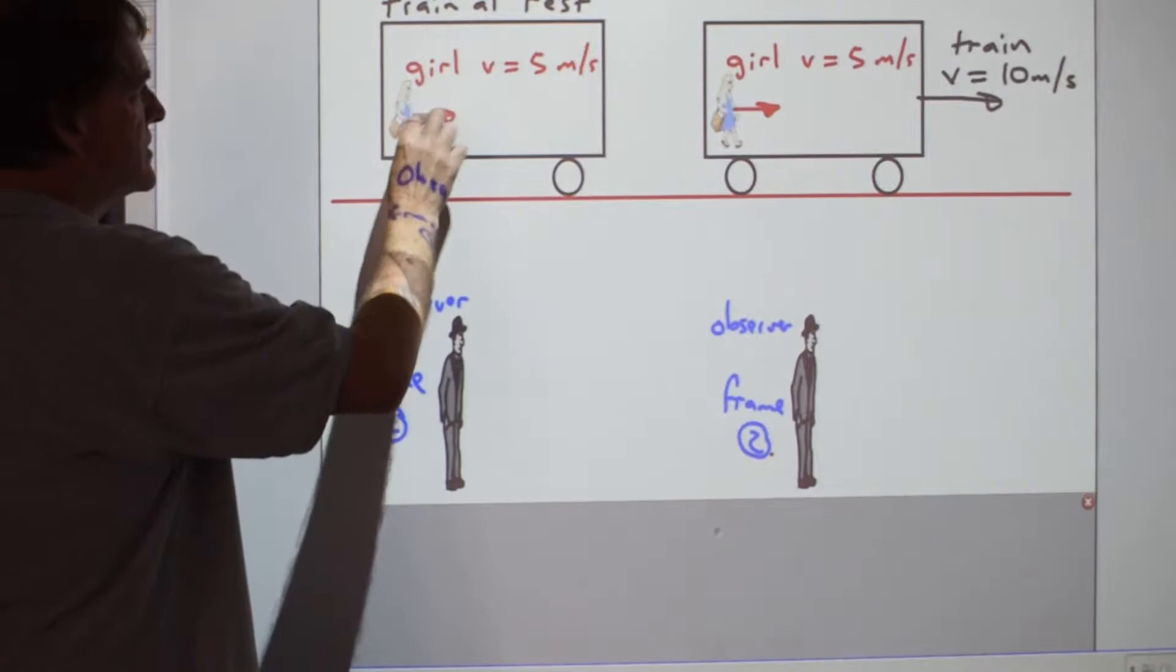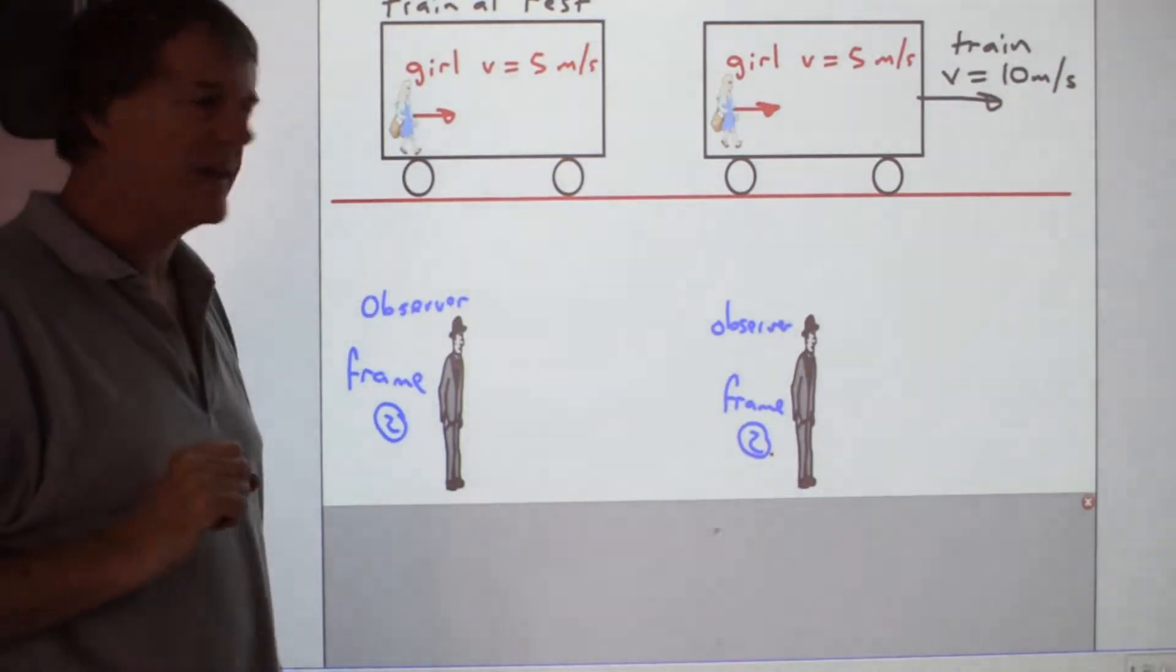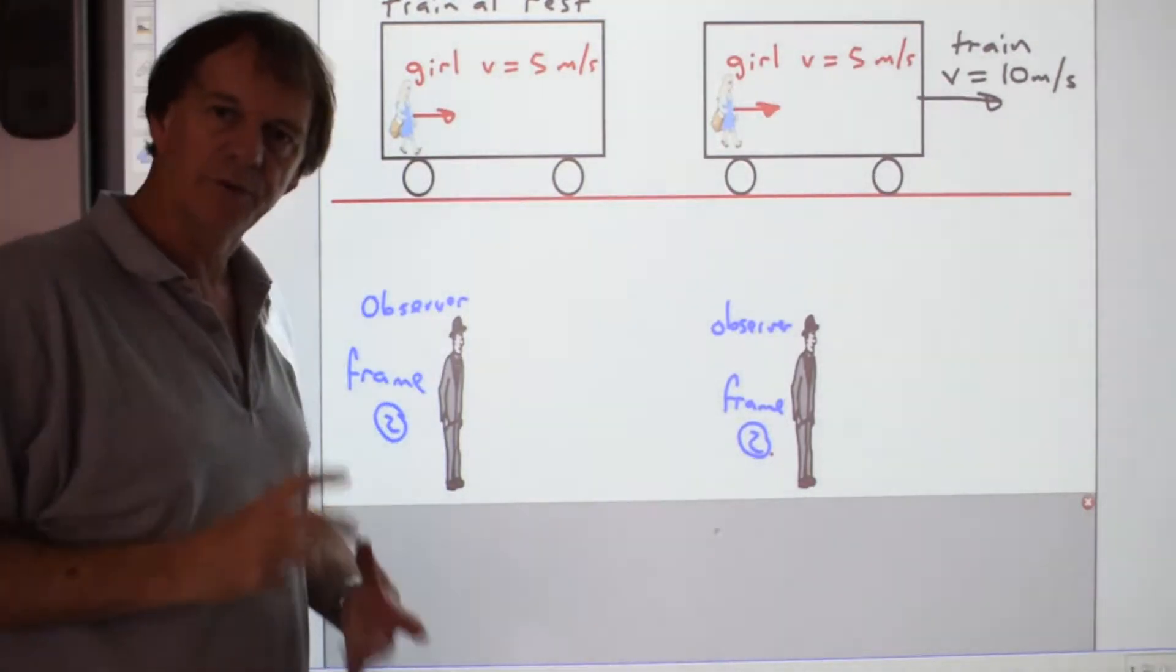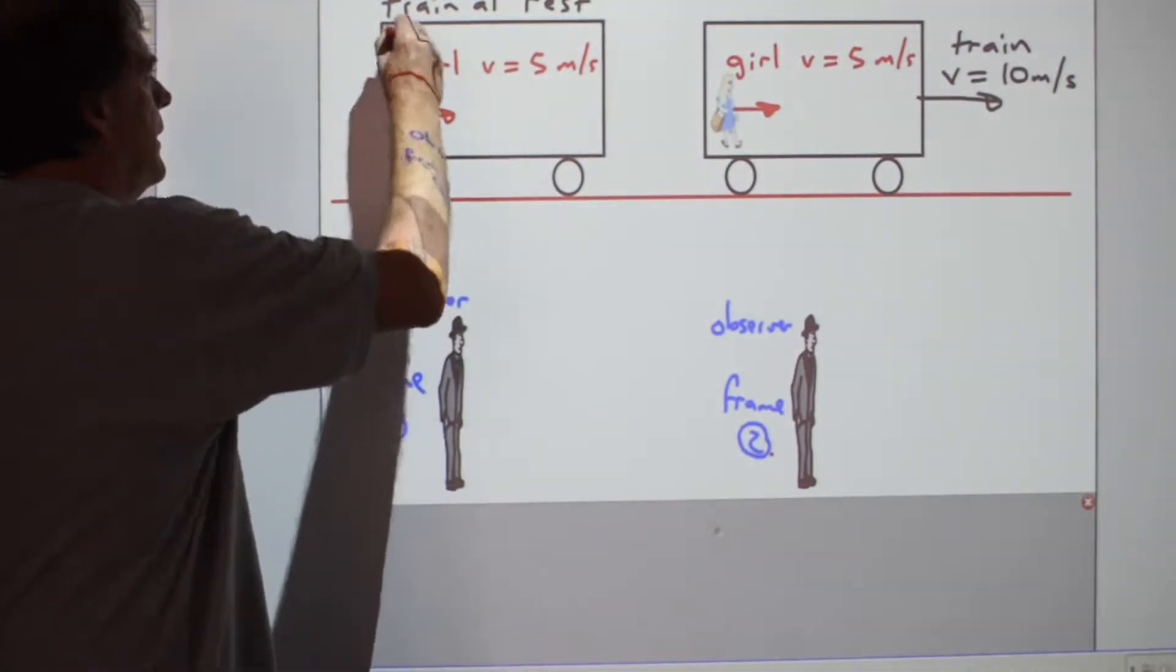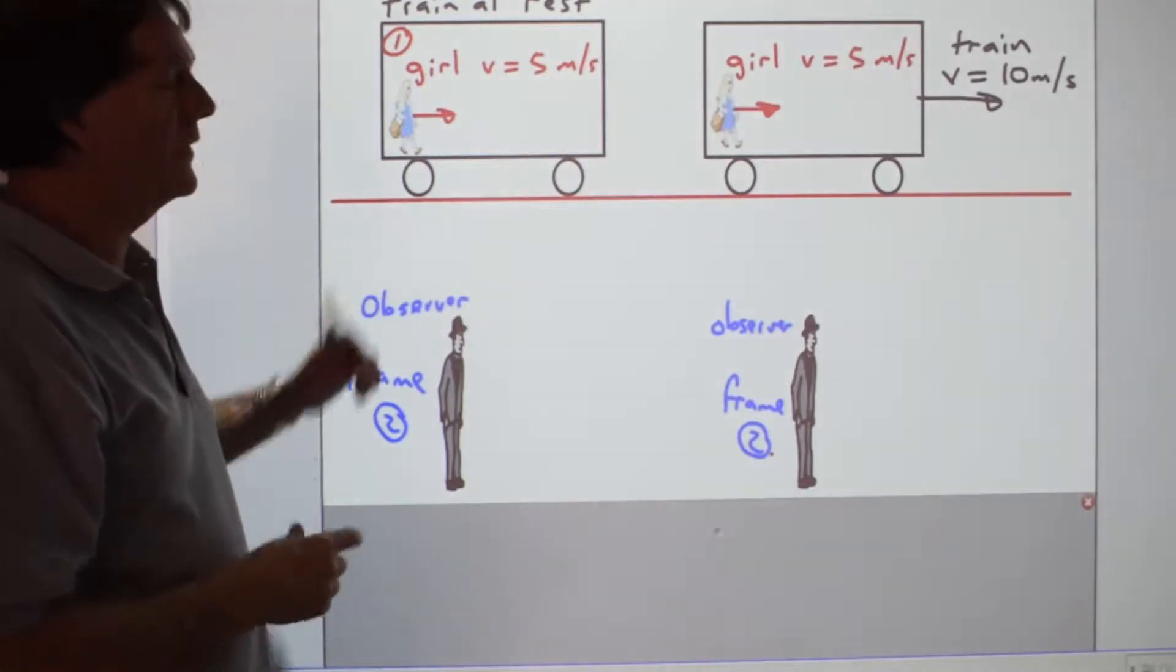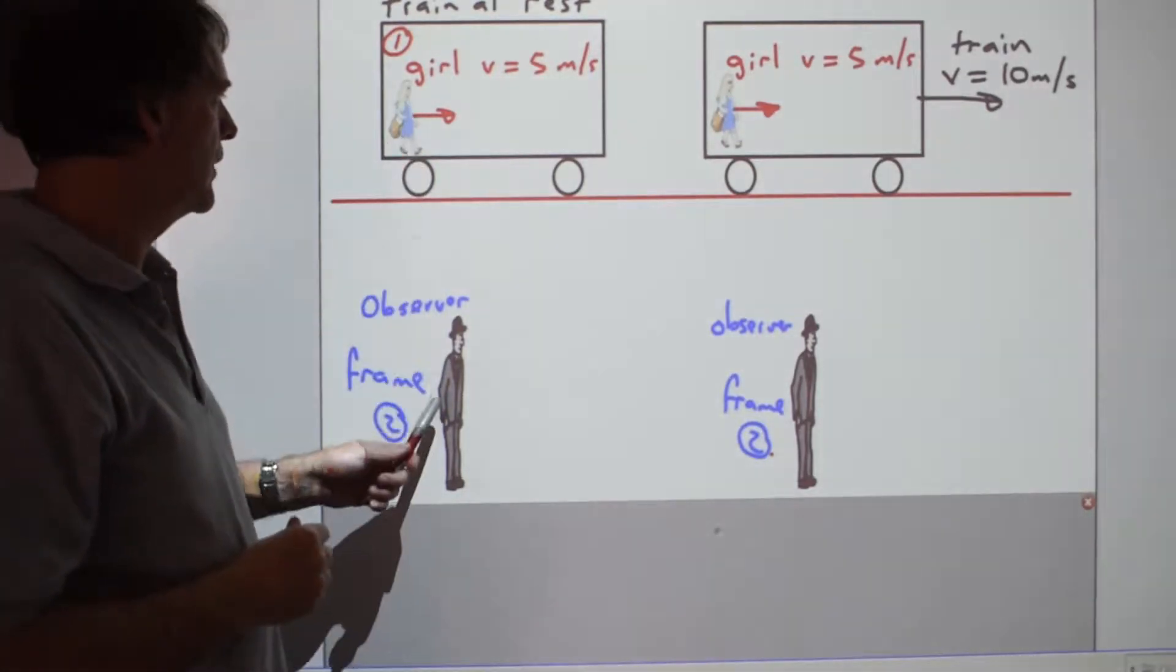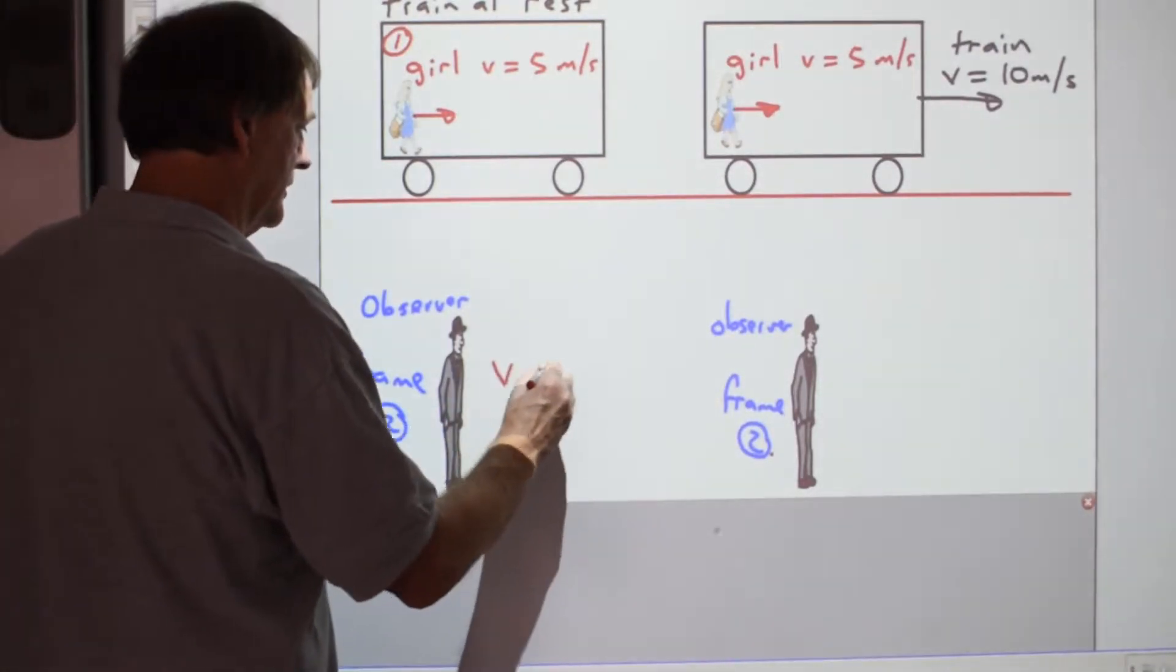If you've got a train at rest and there's a girl walking five metres in one second alongside the train carriage, she would record her speed as being five metres per second because she travelled five metres in one second. Observer two would actually get the same result this time because at the moment their two frames of reference are actually identical. They're not moving with respect to each other. He would also get five metres per second.